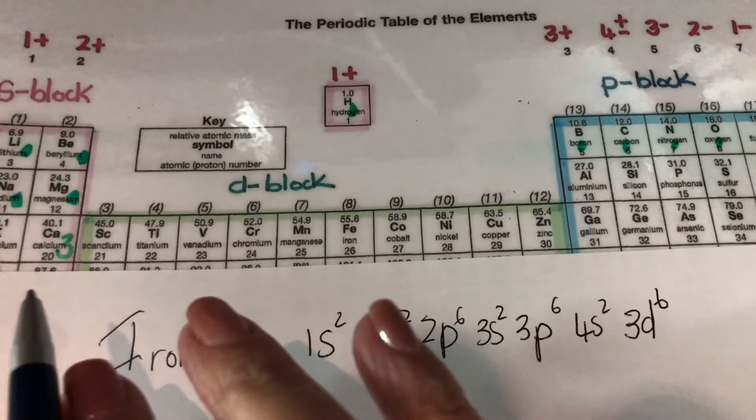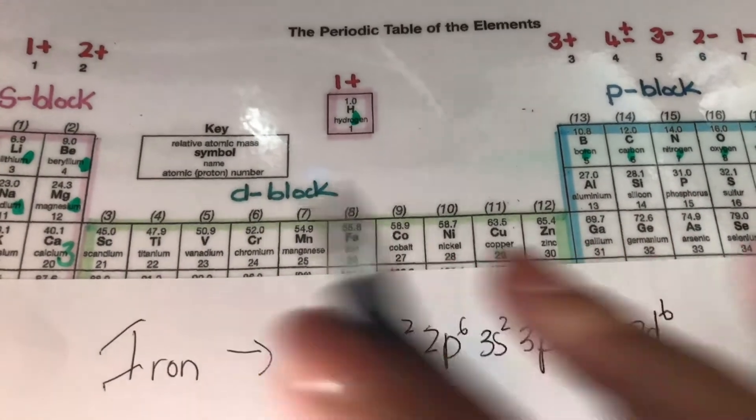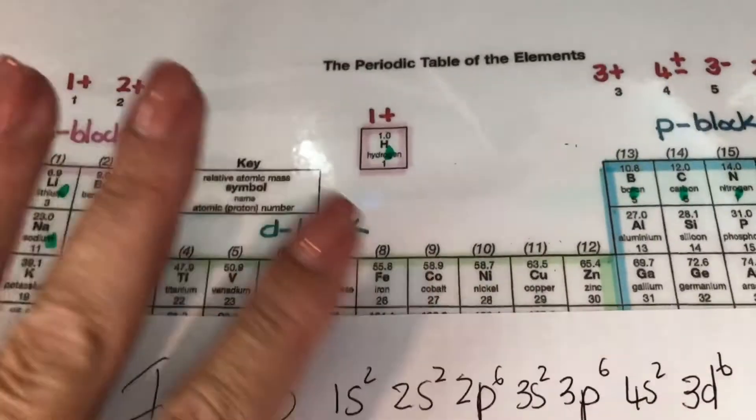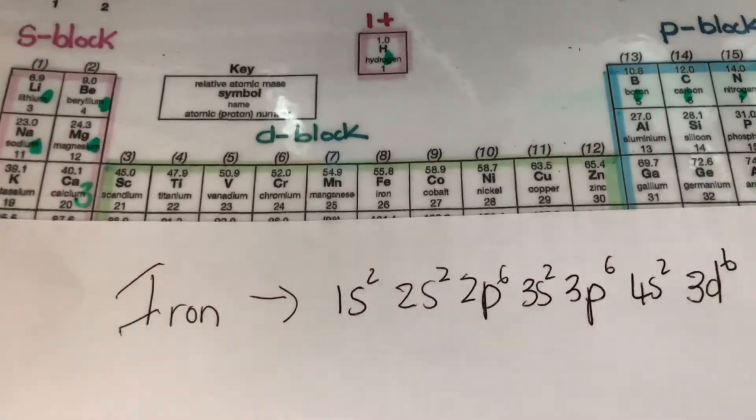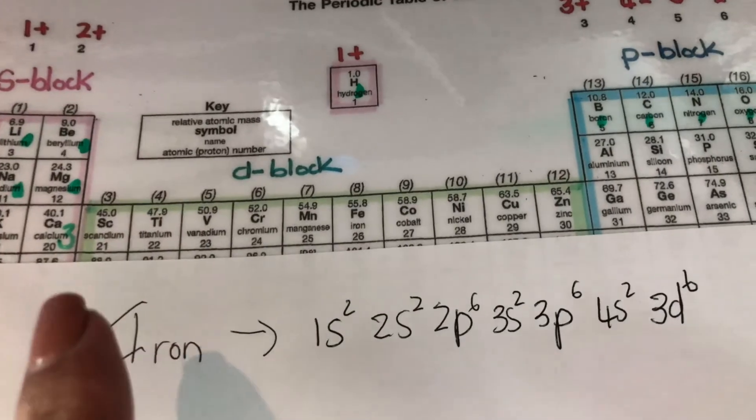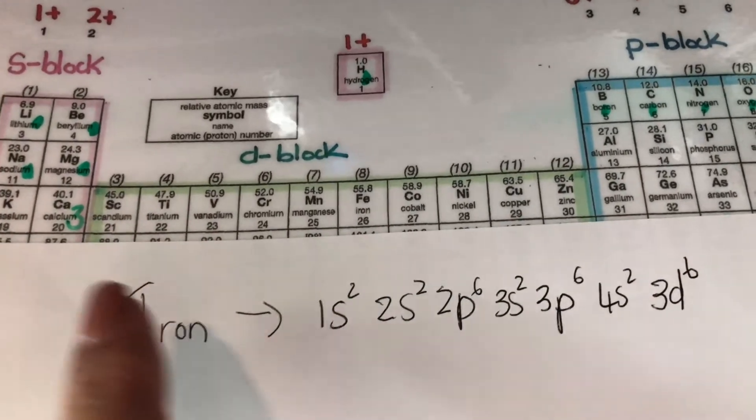Now there's 10 blocks in total for the D orbitals because there are 5D orbitals and those 5D orbitals can each take 2. That's why the D block has 10 elements in it.